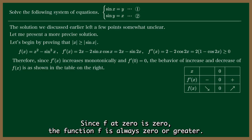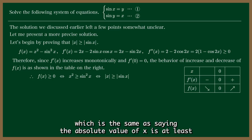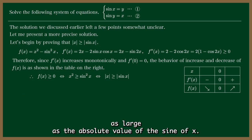Since f of 0 is 0, the function f is always 0 or greater. This means x squared is at least as large as the square of the sine of x, which is the same as saying the absolute value of x is at least as large as the absolute value of the sine of x.